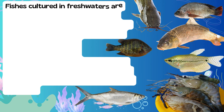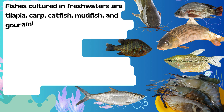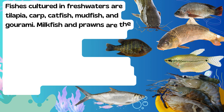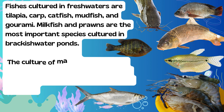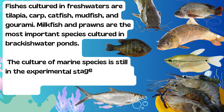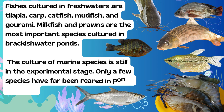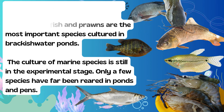Fishes cultured in freshwaters are tilapia, carp, catfish, mudfish, and gurumi. Milkfish and prawns are the most important species cultured in brackish water ponds. The culture of marine species is still in the experimental stage. Only a few species have so far been reared in ponds and pens.